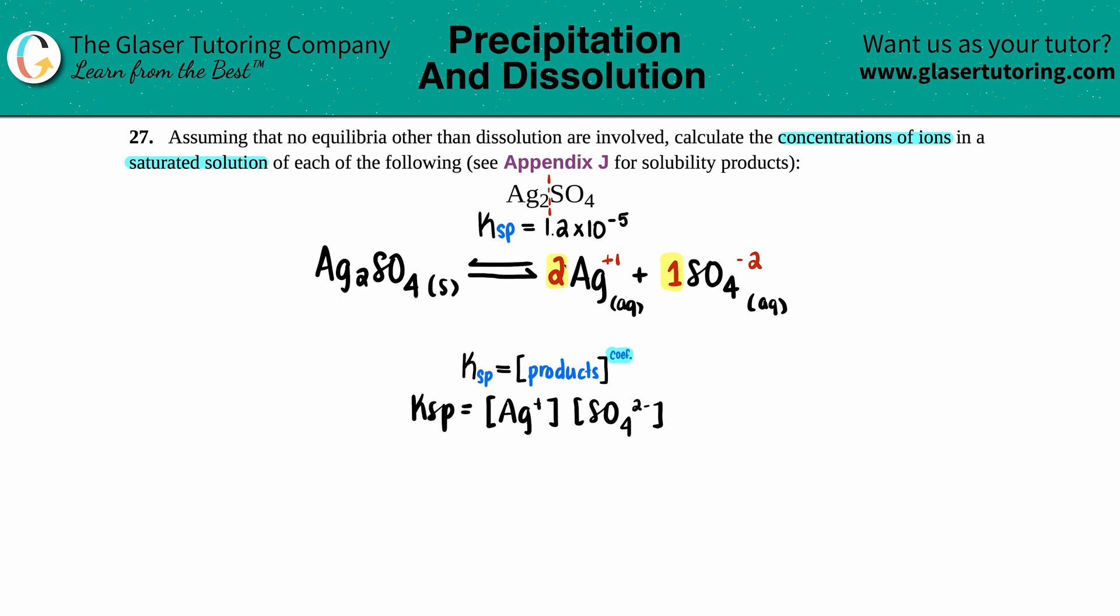There was a two in front of the Ag, but there was no number in front of the sulfate—that means there was one of them. Since there was two in front of the Ag, I take that Ag and I square it here. So now Ksp, that was in the back of the chapter: 1.2 times 10 to the negative fifth.